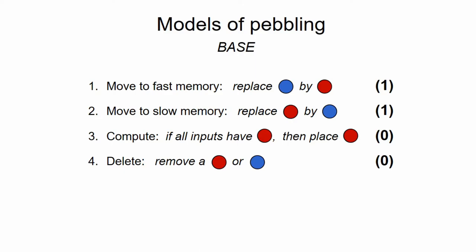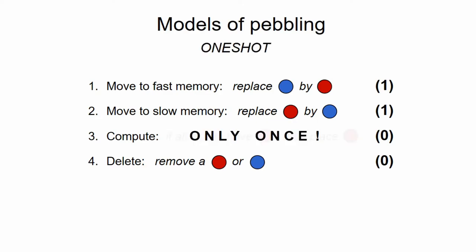So, we refer to the setting introduced so far as the base model of pebbling, but related work has also looked into different variations of this problem. For example, note that in this base model, you can have recomputations — that is, you can just delete the red pebble from a node and then compute it back there, without having to transfer it to slow memory in the meantime. And one variant is the so-called one-shot model, where this is banned by saying that the computation operation can only be invoked on each node once.